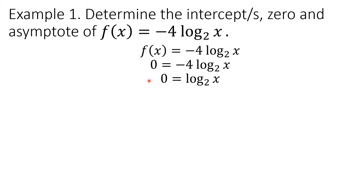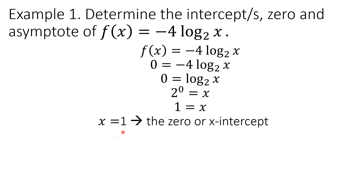Since it is now written in the form 0 = log_b(x), we may rewrite it in exponential form. In exponential form, this is 2⁰ = x, and we know that any number raised to the 0 power equals 1. So 1 equals x, or by the reflexive property, x equals 1. That value of x when y equals 0 is the zero or the x-intercept.